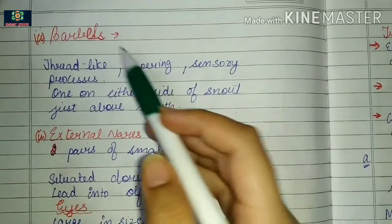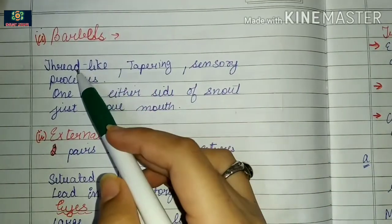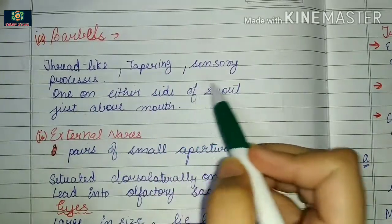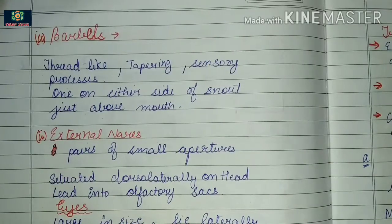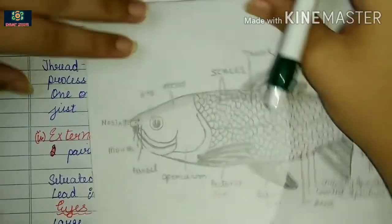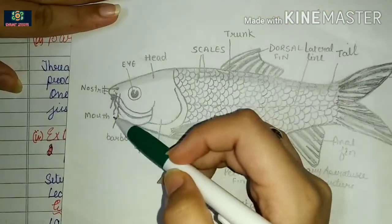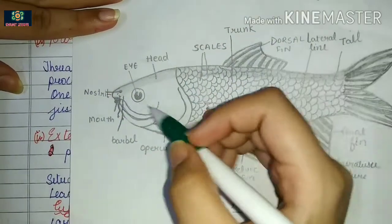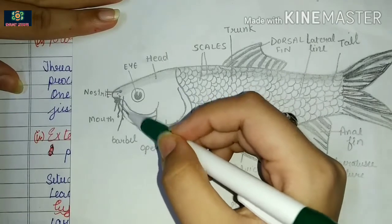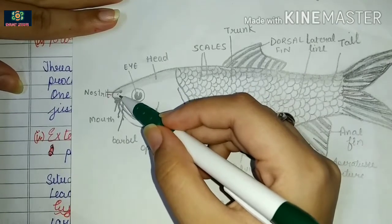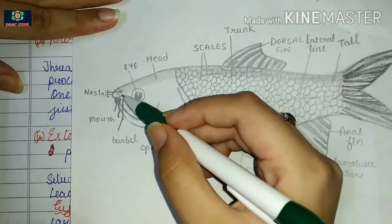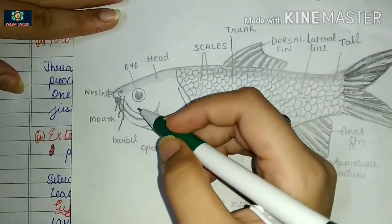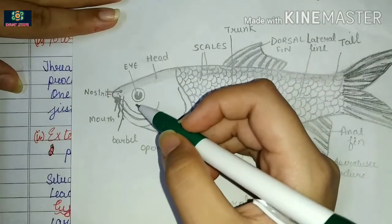In the head region, there are thread-like tapering sensory processes called barbels — one on either side of the snout, just above the mouth. These are hair-like, thread-like processes that act as sensory organs and help detect waves and water currents.